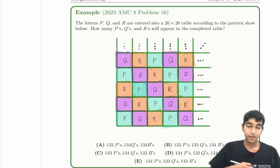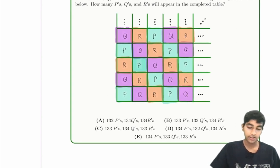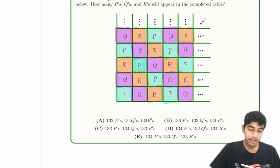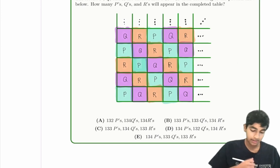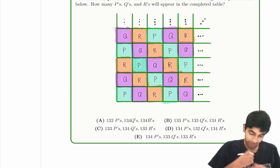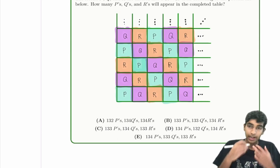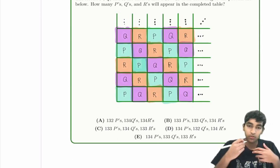There is this massive grid of letters, and the letters P, Q, and R are entered into this 20 by 20 table. How many P's, Q's, and R's will appear in this completed table? 20 by 20. This is really tricky. So they've got a bunch of lines of just P, Q, and R.